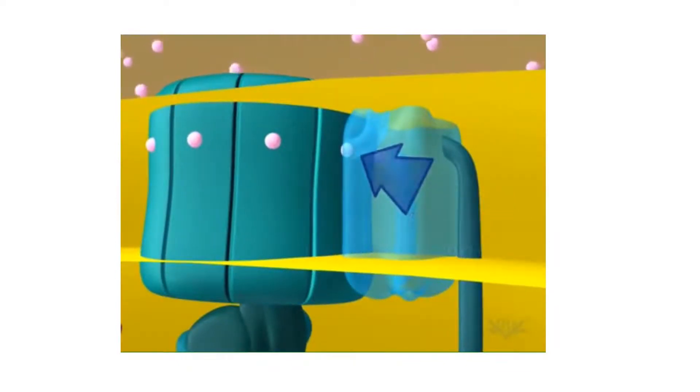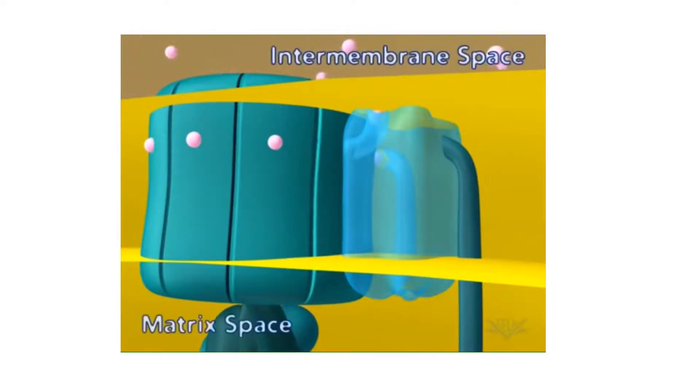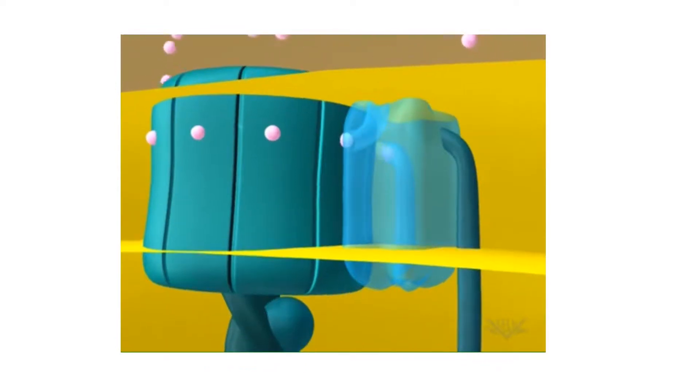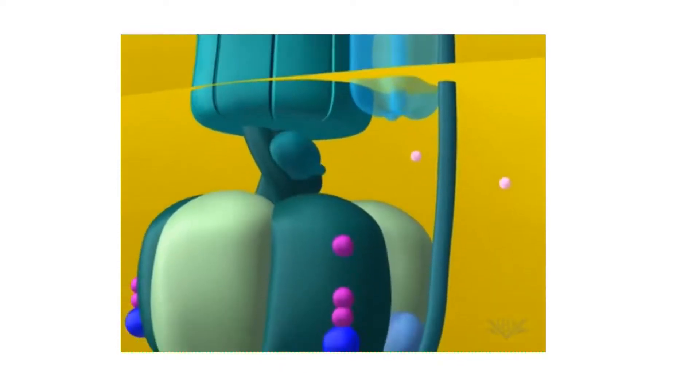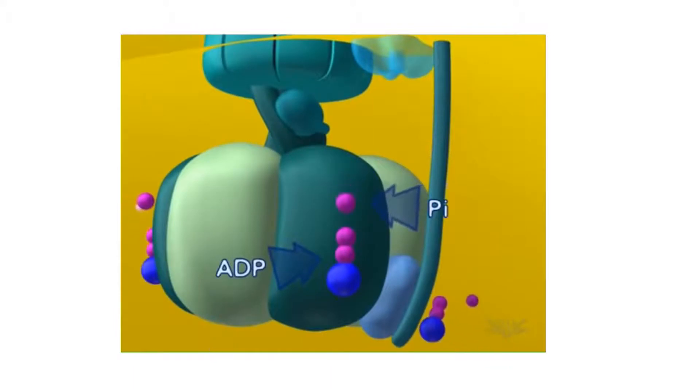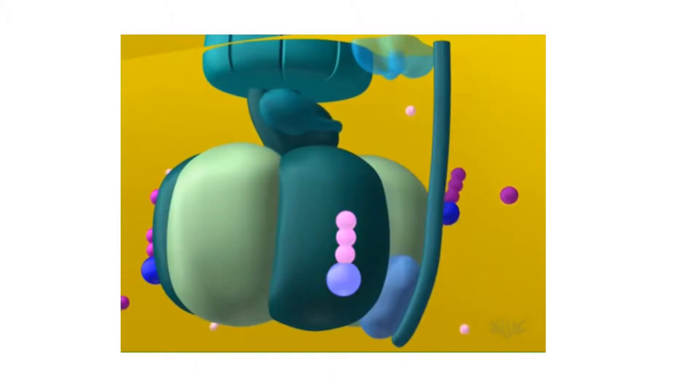One hydrogen ion enters the ATP synthase complex from the intermembrane space, and a second hydrogen ion leaves it on the matrix space. The upper part of the ATP synthase complex rotates when a new hydrogen ion enters. Once three protons have entered the matrix space, there is enough energy in the ATP synthase complex to synthesize one ATP. In this way, the energy in the hydrogen ion gradient is used to make ATP.